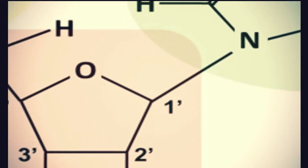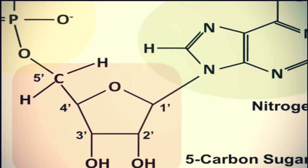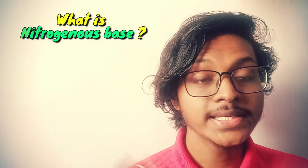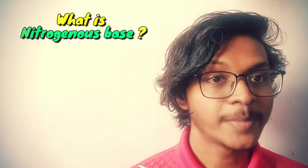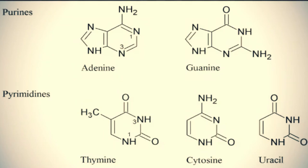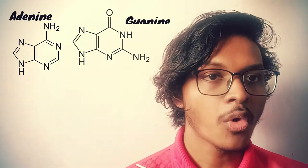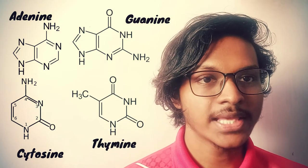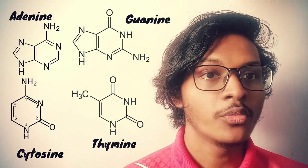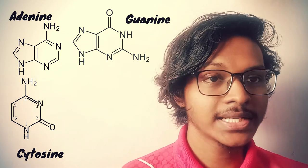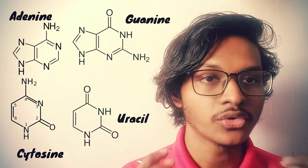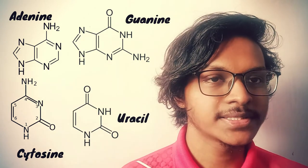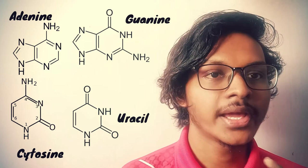Carbon number 1 in ribose sugar is attached to a nitrogenous base. A nitrogenous base is a molecule that contains nitrogen and has the chemical properties of a base. The nitrogenous bases in DNA are adenine, guanine, cytosine, and thymine. In RNA, thymine is replaced by uracil, so the nitrogenous bases in RNA are adenine, uracil, cytosine, and guanine.